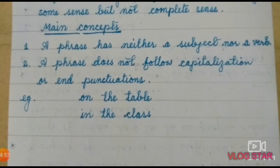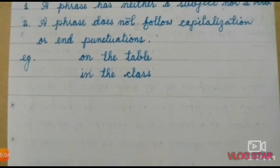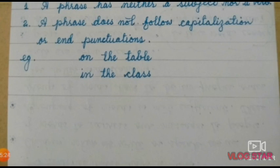Let's see some examples. Kuch examples ke zariye samjhte hain. 'On the table', 'In the class' — yeh bhi kuch shabdhon ka samooh hain, lekin inka thoda bahut arth nikalta hai. 'On the table' means table ke upar — lekin table ke upar kya, koi arth complete nahi hai. Agar iske aage 'The book is on the table' likha hota, toh iska complete arth nikalta.